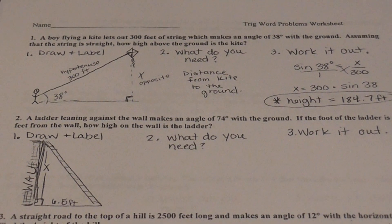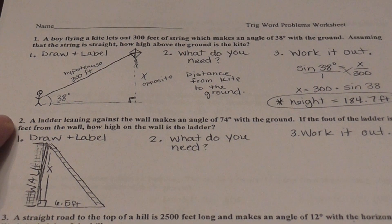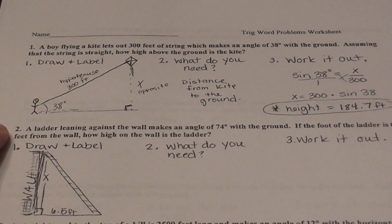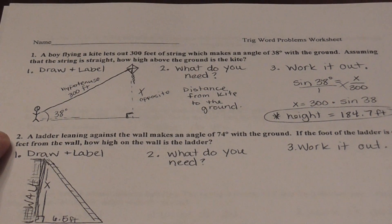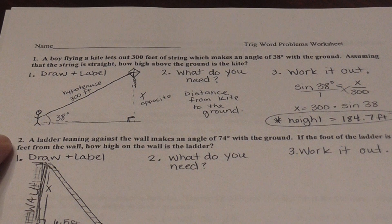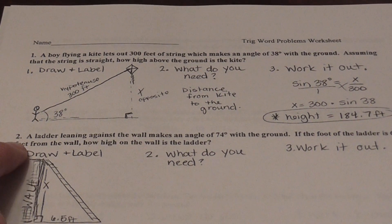So let's look at the next one. A ladder leaning against the wall makes an angle of 74 degrees with the ground. If the foot of the ladder is 6.5 feet from the wall, how high on the wall is the ladder? So again, you've got to draw yourself a little diagram.